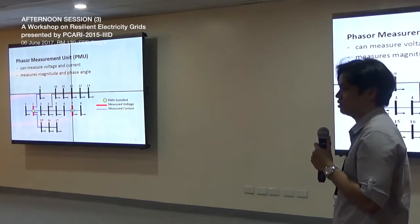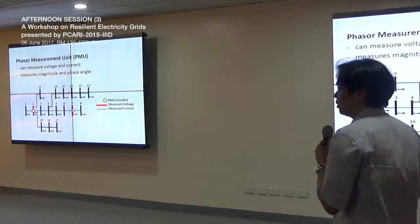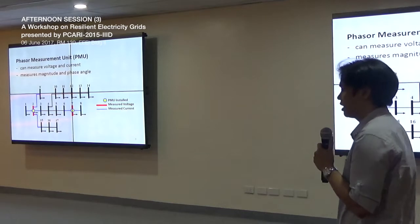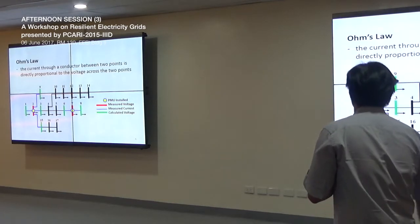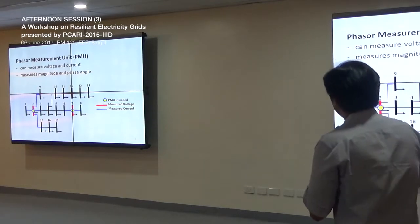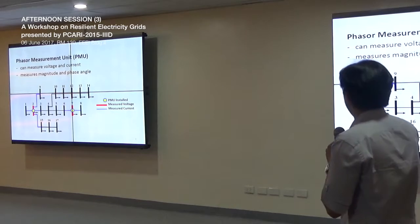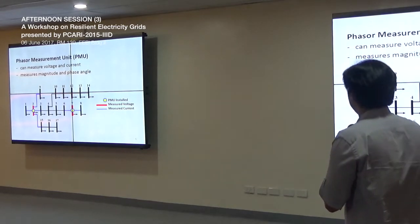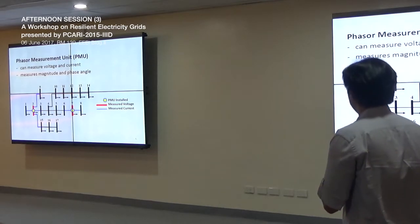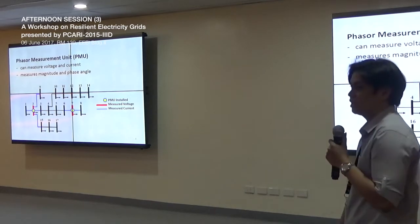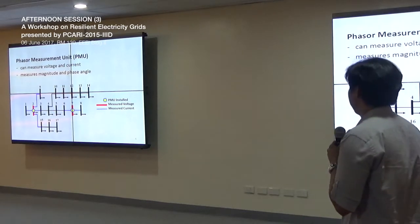A PMU can actually measure voltage and current. These measurements include the magnitude and the phase angle. As an example, if we place a PMU at bus 2 and bus 7 of this sample system, we can directly measure the bus voltage at bus 2 and bus 7, as well as the incident line current — both the magnitude and the phase angle.